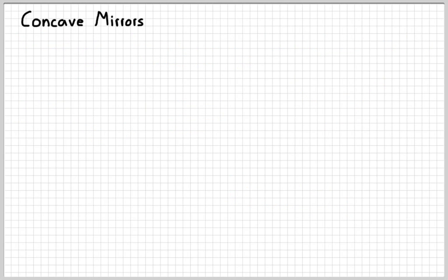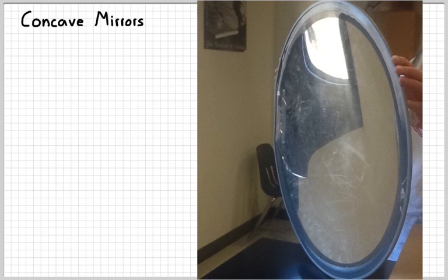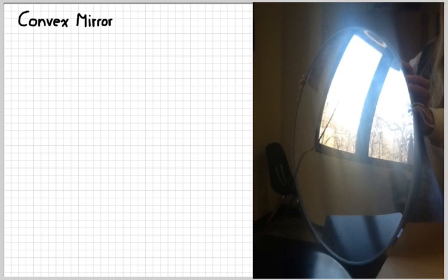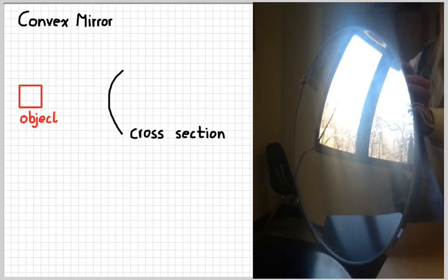There are two kinds of spherical mirrors we're going to learn about. The first is a concave mirror. If we turn it to the side and take a cross-section, the object is over here on the left. A convex mirror would have the surface curving the opposite direction relative to the object, and looking at those two pictures you can see a difference in the image that shows up on the mirror.